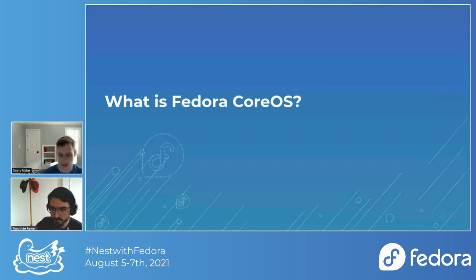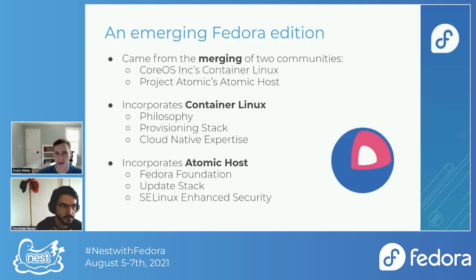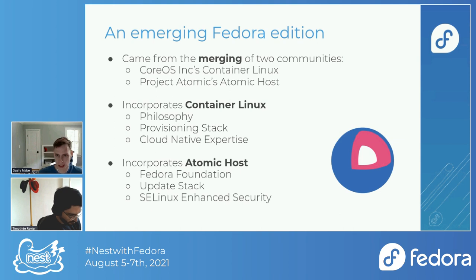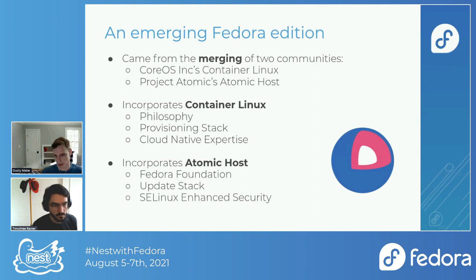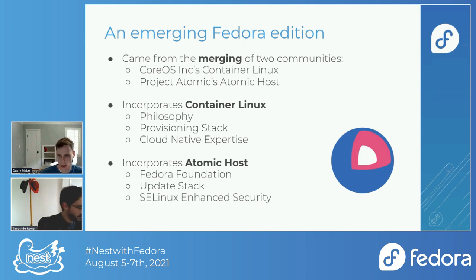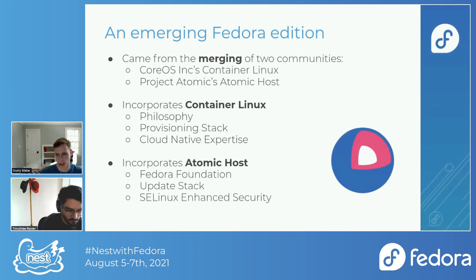What is Fedora CoreOS? We call ourselves an emerging Fedora edition. Fedora CoreOS at its inception came from two separate communities: on one side we had CoreOS the company's Container Linux project, and then we had Project Atomic from Red Hat and the Atomic Host derivatives — Red Hat Atomic Host, CentOS Atomic Host, and Fedora Atomic Host. Fedora CoreOS is the merging of Container Linux and Fedora Atomic Host.